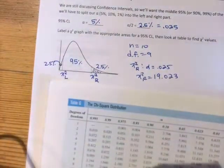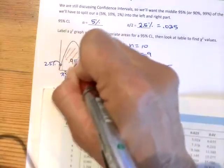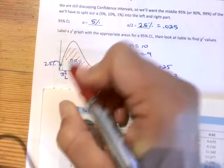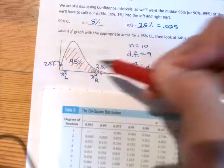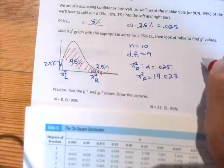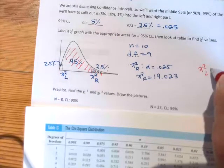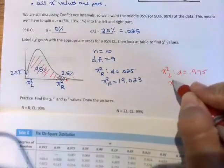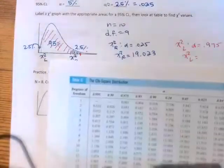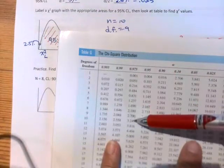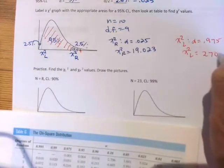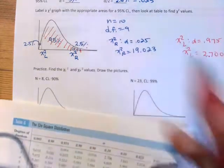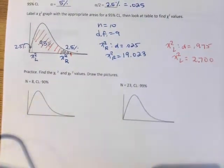Now to find chi-square left, just because of how my table is set up, I need to look for the alpha value that contains all of the area to the right of this value. So that's the 95% plus the 2.5%. So for chi-square left, the alpha that I need to use is .975. So that corresponds to a chi-square left value of, and there it is, .975, and we'll come down to the 9 and 2.7. They should work out numerically so that your chi-square left value is smaller than your chi-square right value. If that doesn't happen, then you know something's gone amiss.